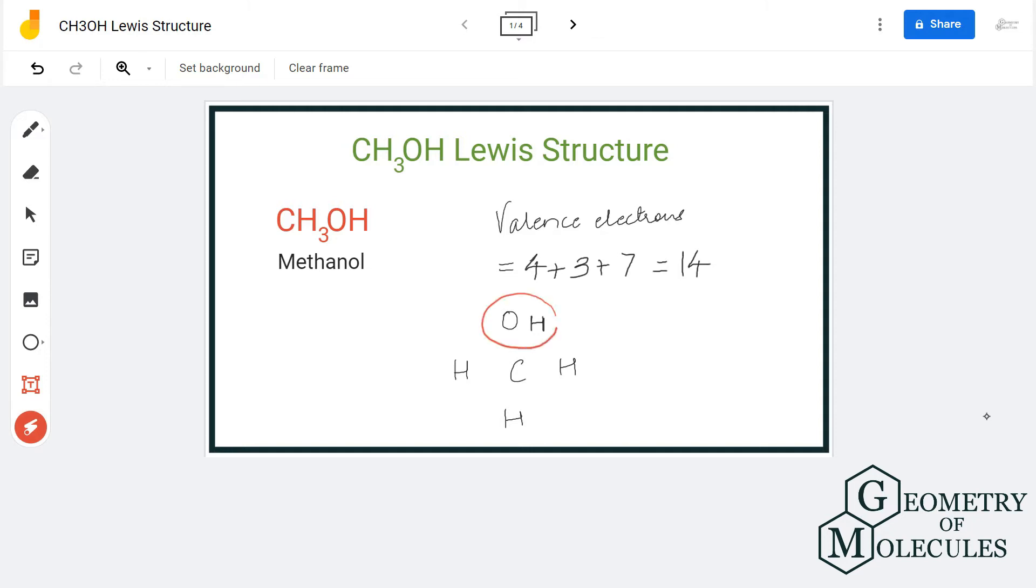The OH group here will go on the outside because it's a functional group for alcohol. All the hydrogen atoms will be on the outside as well because hydrogen cannot take the central position in the Lewis structure. So we'll place carbon in the center, all three hydrogen atoms around carbon, and an OH group.